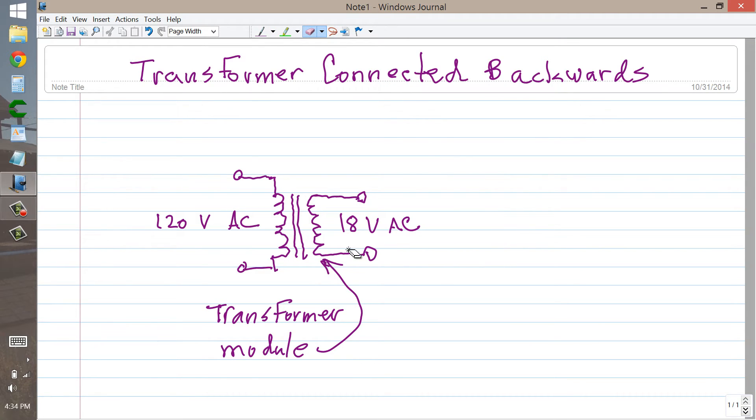Now, what I wondered is, what would happen if I reversed this transformer and replaced the secondary as the primary, and the primary as the secondary, and then pumped 18 volts AC into this side? What would I get out over here? Would I get 120 volts AC again? Or would I get something different?